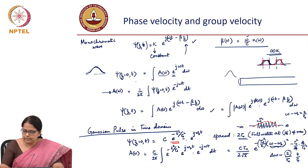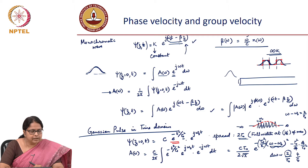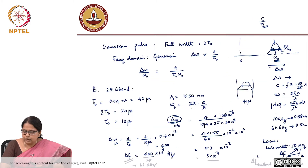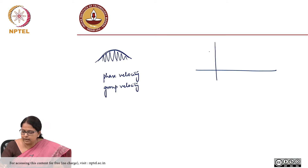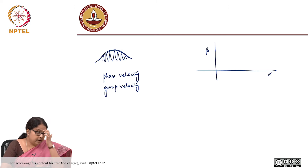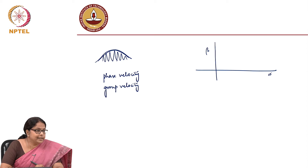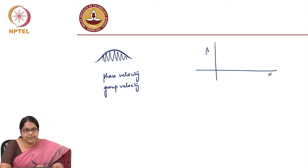Phase velocity is defined for a monochromatic wave — it is omega naught divided by beta. So if I plot beta versus omega for free space, omega by beta is a constant which is the speed of light. How would this plot look?